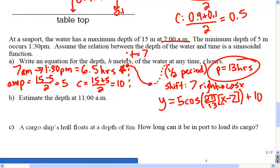Okay, so from that information we can figure out the depth of the water at 11 a.m. We just need to add this into the graphing calculator using our model: 5 cosine 2π over 13 times (11 minus 7) plus 10. So according to this model, the depth is about 8.23 meters at 11 o'clock in the morning.